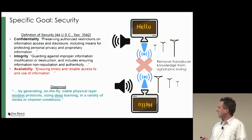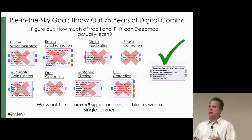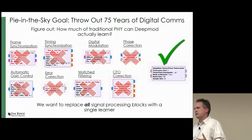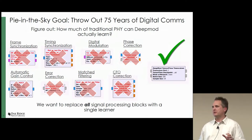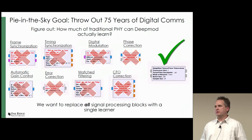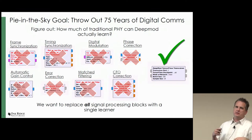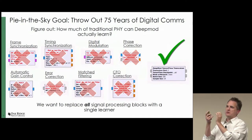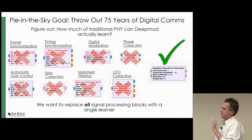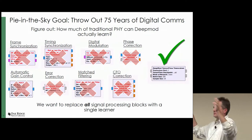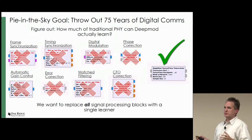That's the specific goal of DeepMod. My big vision is to replace all signal processing — all digital communications developed over the past 75 years — with a single machine learner. Anybody who's tried to make a modem using USRPs over the air knows it's very frustrating. There are all these blocks — phase correction, carrier frequency offset estimation, matched filtering, error correction — all required to get bits from one side of the channel to the other. We want to replace them with just one machine learner, not a hierarchical block, just a machine.